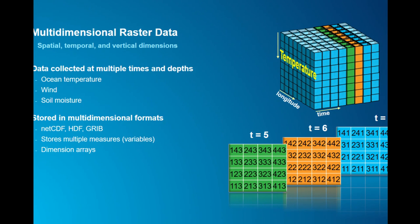These formats have a very interesting and common characteristic: they store multiple measurements in one file. By measurements, we also call them variables. Each variable could contain multiple dimensions, which could span like 100,000 slices — as we call them. So it could span multiple dimensions. And this type of data — one collection — could easily contain many, many files.